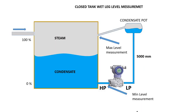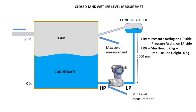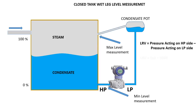First we calculate LRV. We take the height of the impulse line connected to the LP side of the transmitter as 5000 mm. The HP side pressure equals minimum measuring height times specific gravity of the condensate liquid. The LP side pressure equals height of the impulse line times specific gravity of the filled liquid. So the LRV equals 0 times 1 minus 5000 times 1.